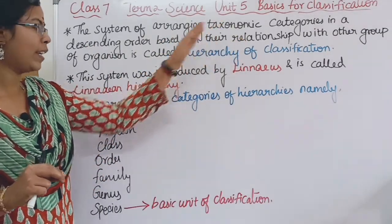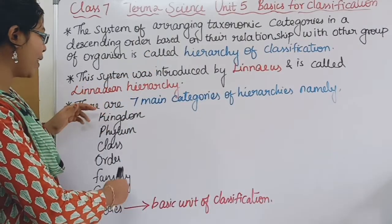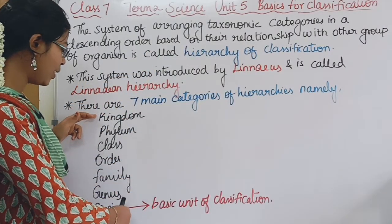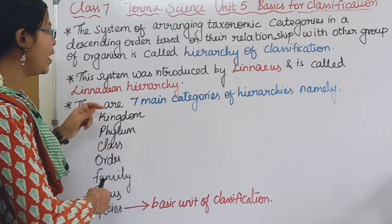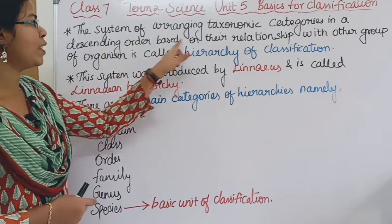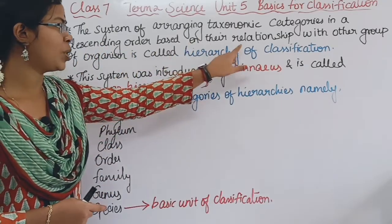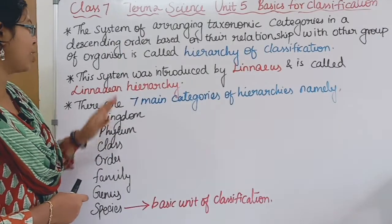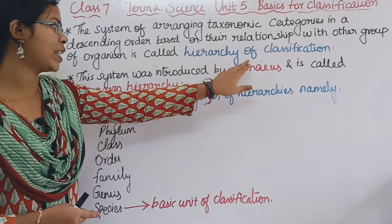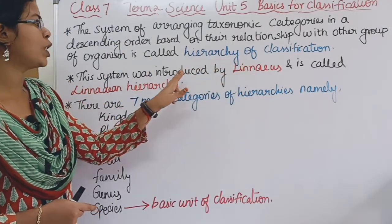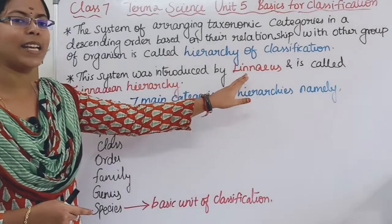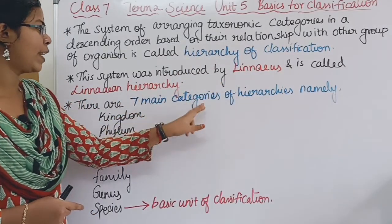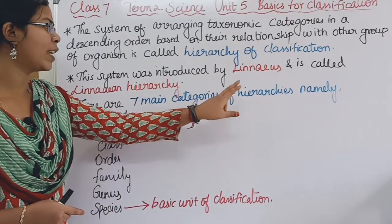Taxonomic categories are in descending order: Kingdom, Phylum, Class, Order, Family, Genus, Species. This descending order is based on their relationship with other groups. This is called the hierarchy of classification. It was introduced by Linnaeus and is called the Linnaean hierarchy. These are the seven main categories of hierarchy.